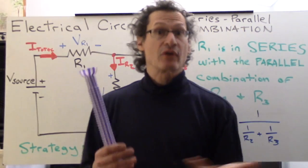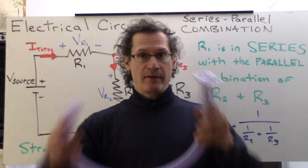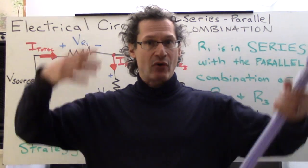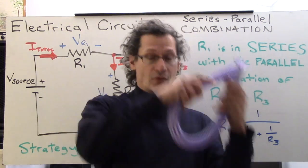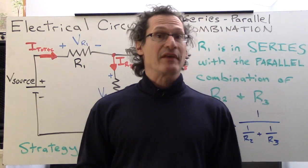So far, we've looked at the pure series circuit, which is one loop around, like so, and we've also looked at the pure parallel circuit that has many loops, like so, for the circuit elements.